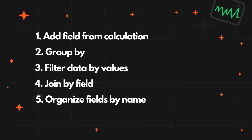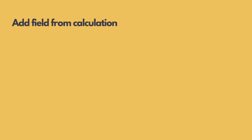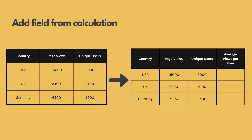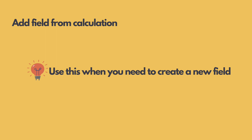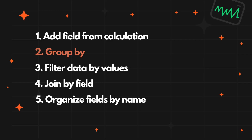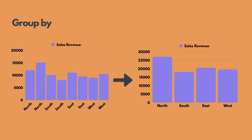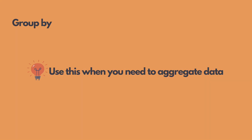In this milestone, I'm going to discuss five data transformations, starting from the Add Field from Calculation Transformation. The Add Field from Calculation Transformation allows you to create a new column by performing a custom calculation on one or more existing fields in your data. Use this when you need to create a new field, such as calculating the total, difference, percentage, or ratio. The Group By transformation allows you to group rows that share the same values in one or more fields. It's similar to the SQL Group By clause. Use this when you need to aggregate data based on one or more fields, such as grouping by a specific category or region.